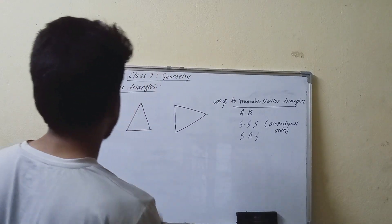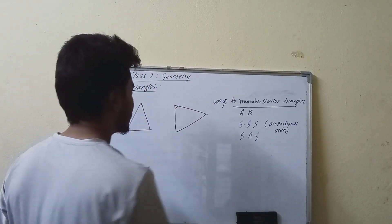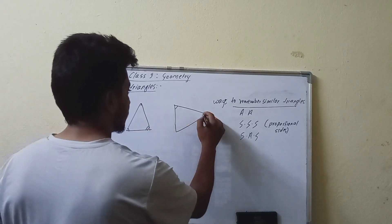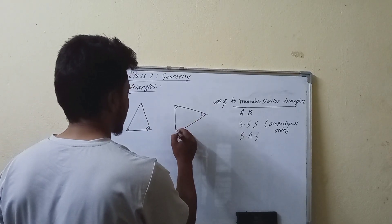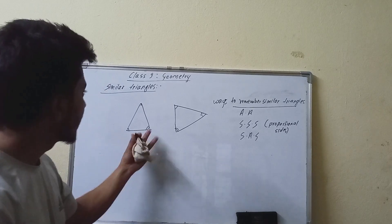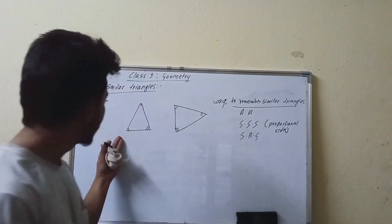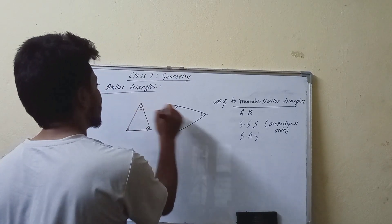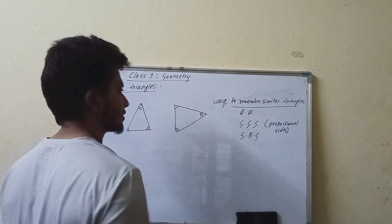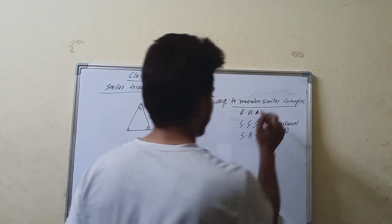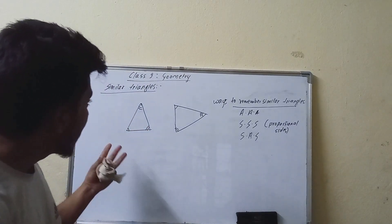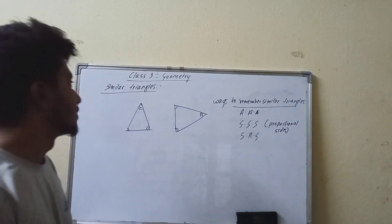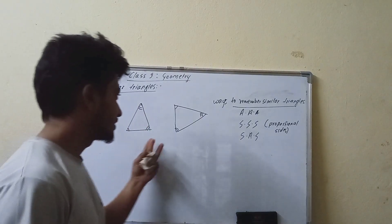These two angles are the same. Their respective angles are the same, and the other two angles are the same as well. This triangle automatically satisfies the condition because all angles sum to 180 degrees. So the three angles are similar — if two angles match, the triangles are similar.